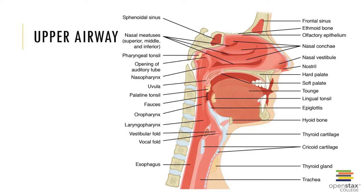The paranasal sinuses include the maxilla, the frontal, the ethmoid, and the sphenoid. Then we have the pharynx, more commonly called the throat. There are several regions of the pharynx: the nasopharynx, the oropharynx, and the laryngopharynx.